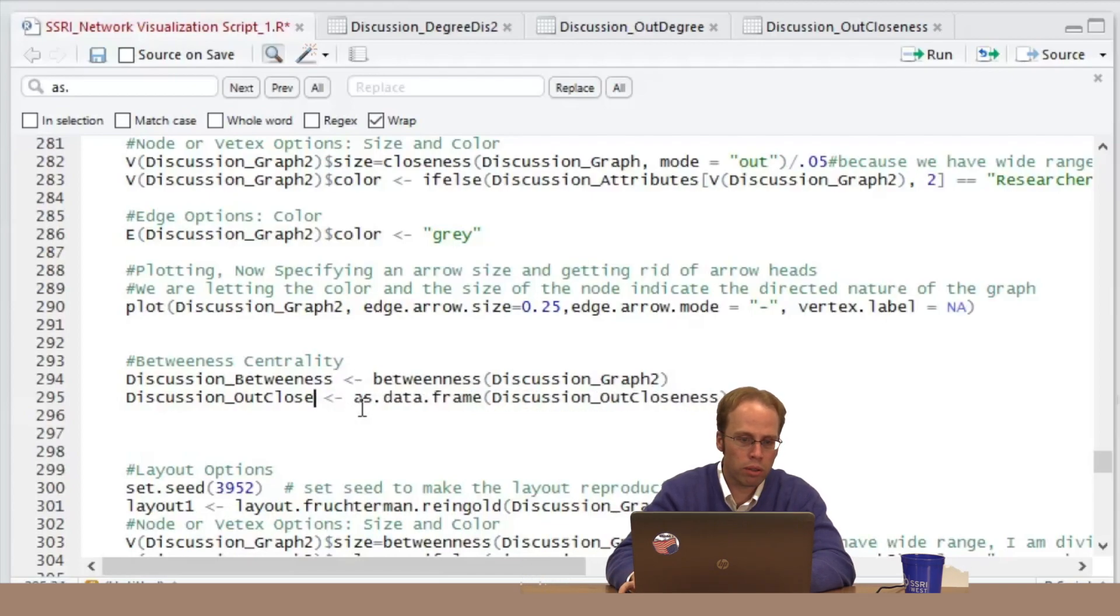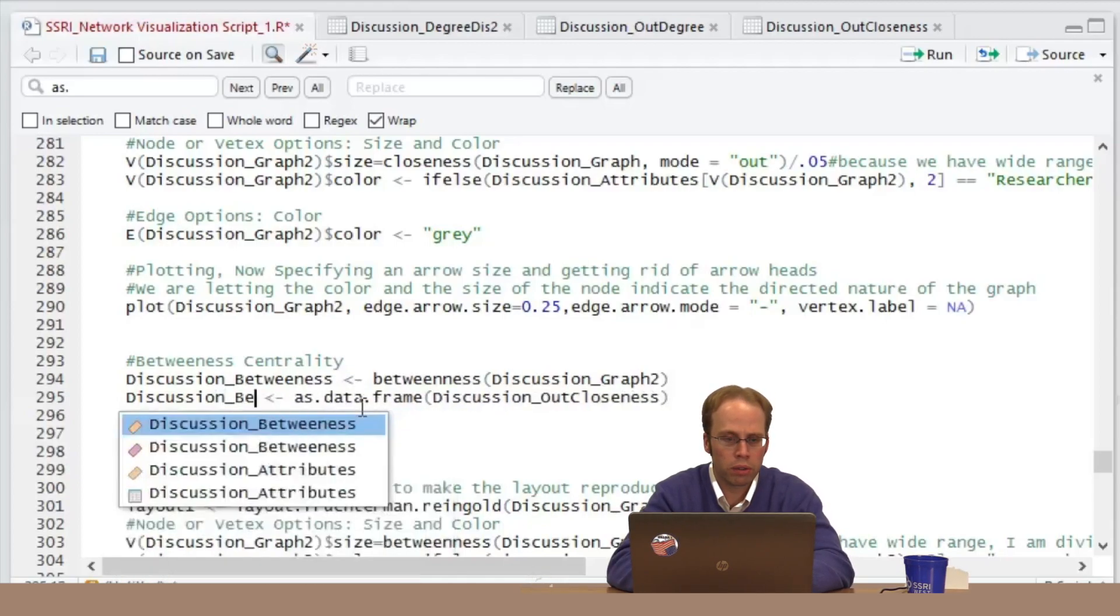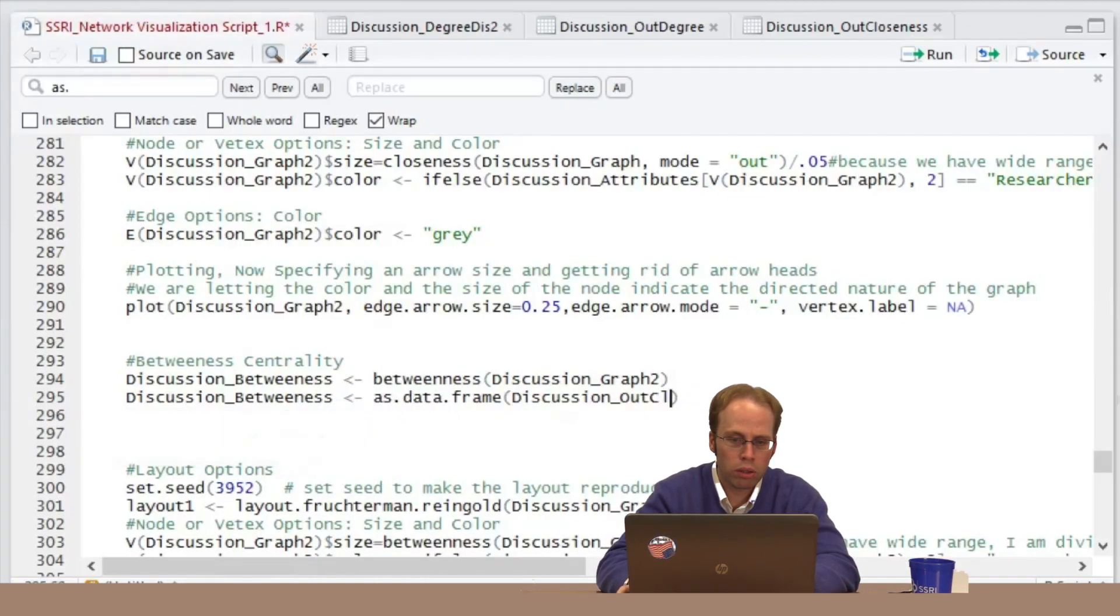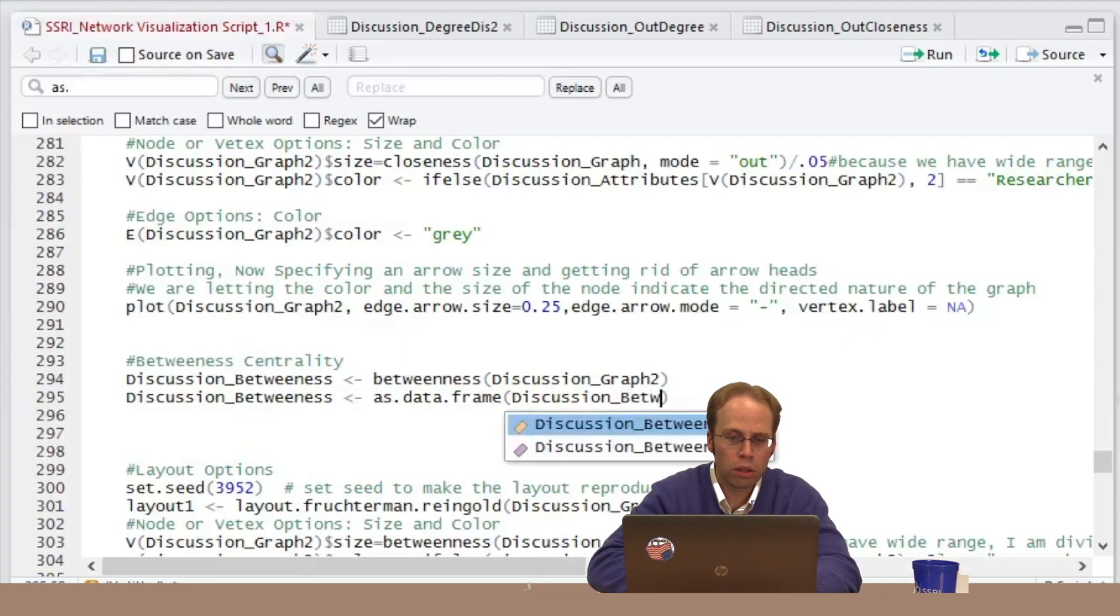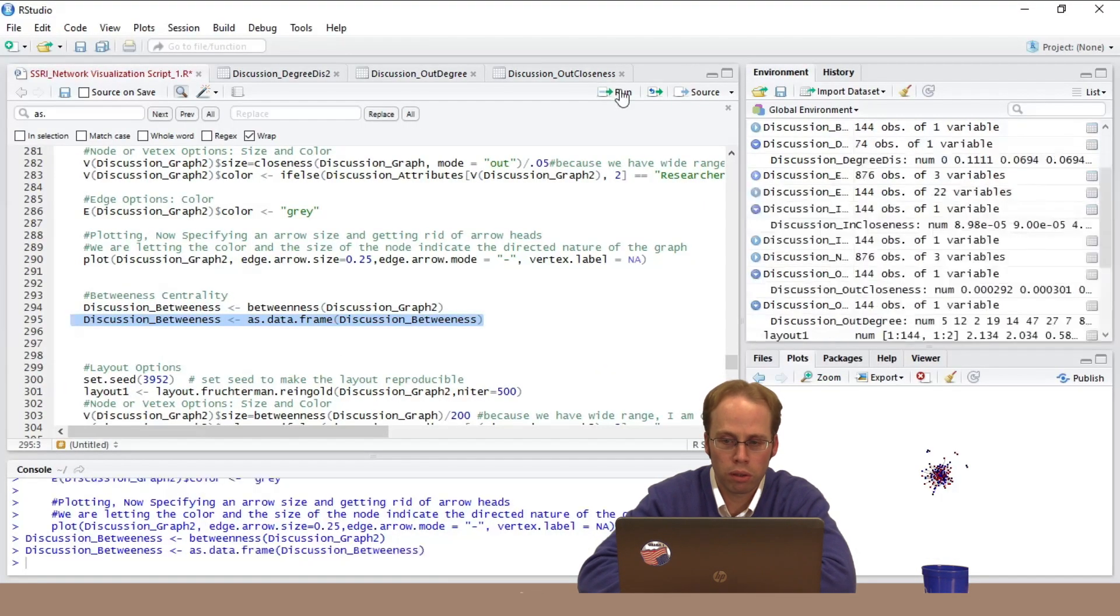So of course I've got to call this what I want to call it, betweenness as data frame, and I want to call this betweenness. Let's see if there's any variation in this measure. Hopefully yes. Much more exciting. Good.